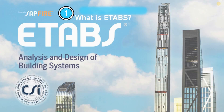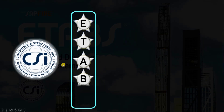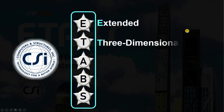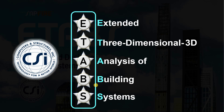What is ETABS? ETABS is constructed from five main letters. It is a software created by CSI, or Computers and Structures Incorporated. ETABS stands for Extended Three-Dimensional Analysis of Building Systems. This software is specialized in the analysis and design of building systems, which is why it performs well beyond other similar softwares on the market.